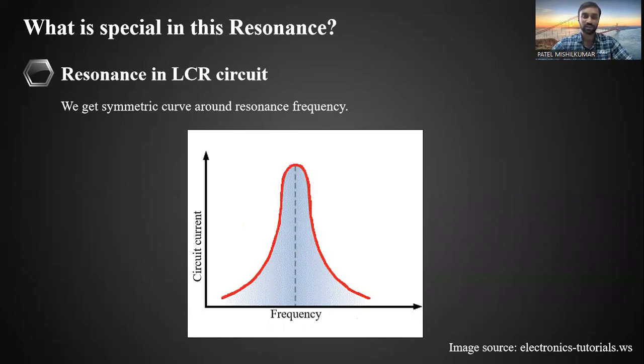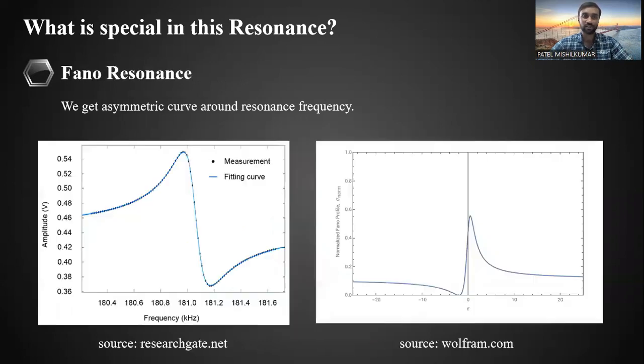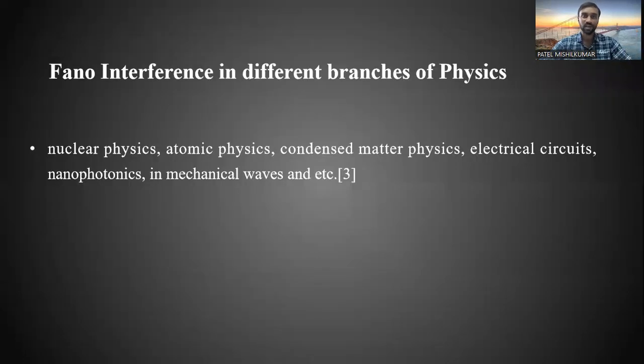This is normal resonance. In Fano resonance, this curve is not symmetric around resonant frequency; it is asymmetric, and that's how it is different from normal resonance. This is the phenomenon of Fano resonance. Since this phenomenon is related to waves, it occurs in various branches of physics, just like nuclear physics, atomic physics, condensed matter physics, electrical circuits, nanophotonics, and mechanical waves.